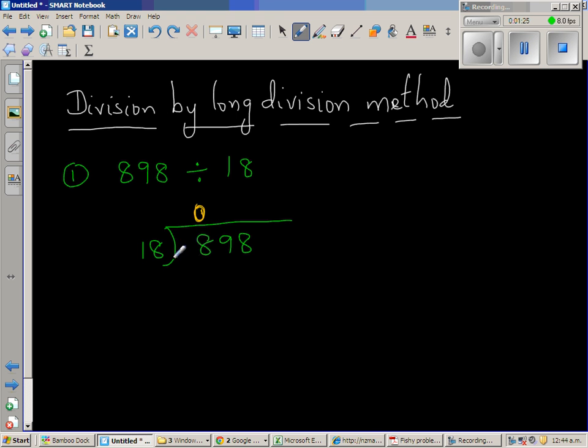Now 18 goes how many times in 89? This is the tens place. So 18 goes four times in 89. Why? Because 18 times 4 is 72. 18 times 2 is 36, so 18 times 4 is 72.